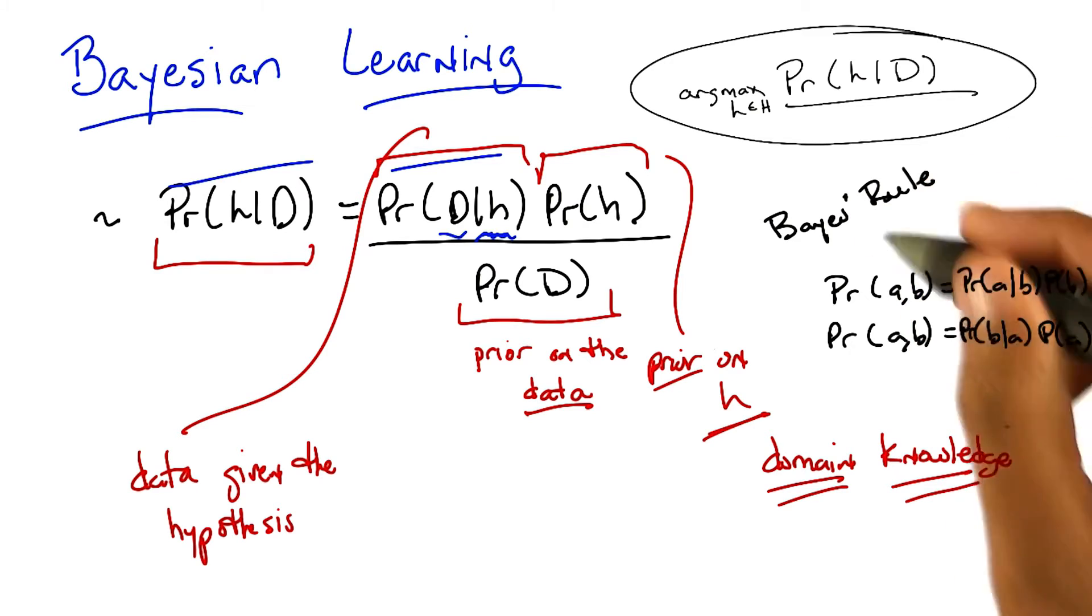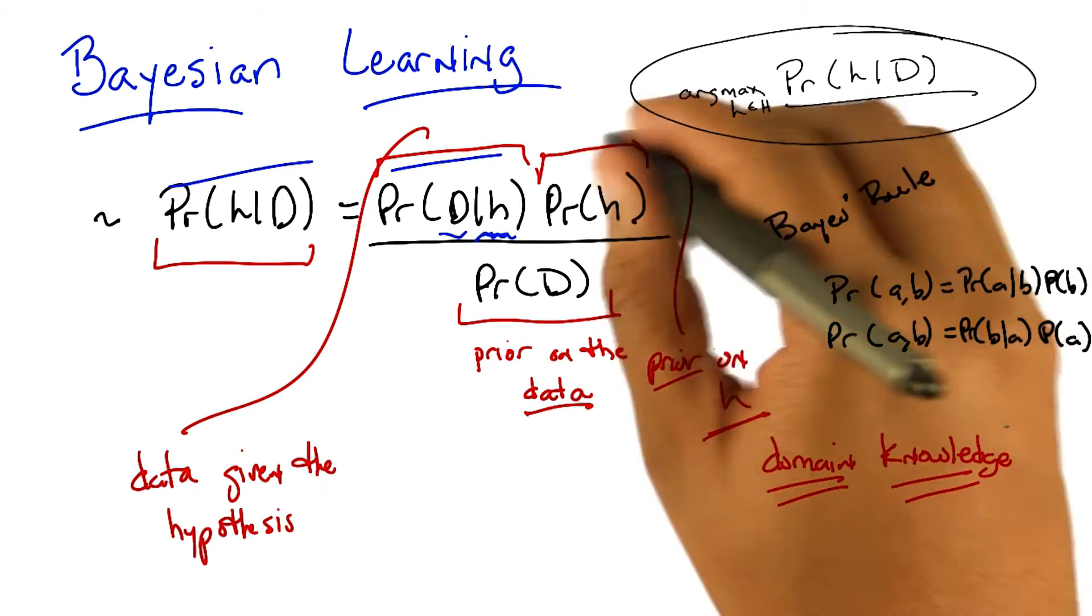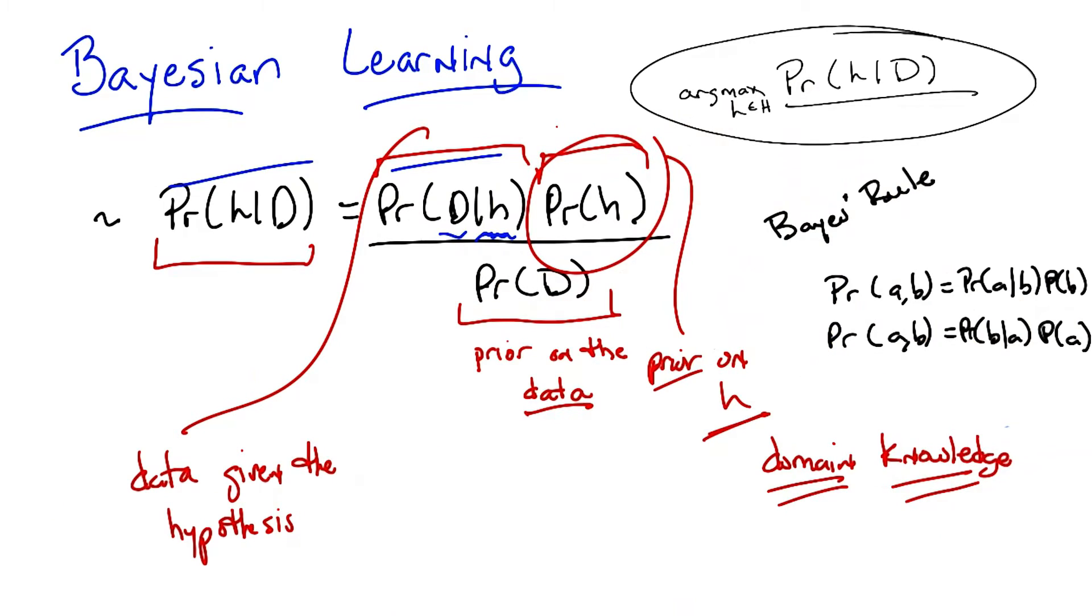And here in Bayesian learning, here in this notion of Bayes rule, all of our prior knowledge sits here in the probability, our prior probability over the hypotheses. Does that all make sense?